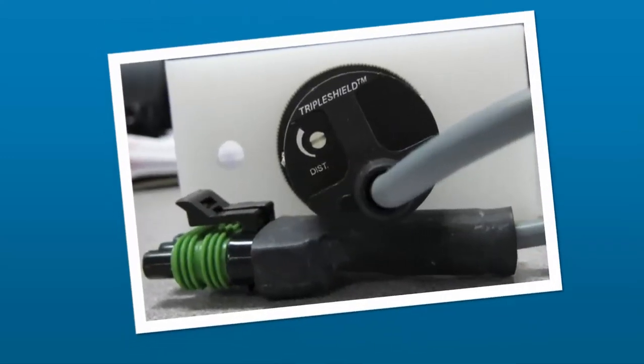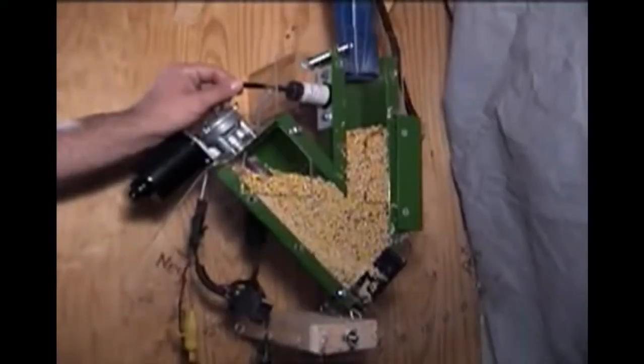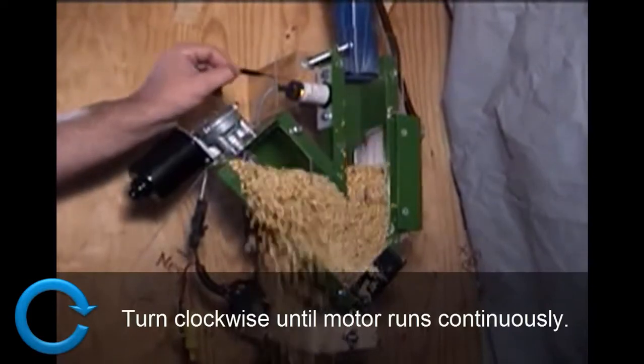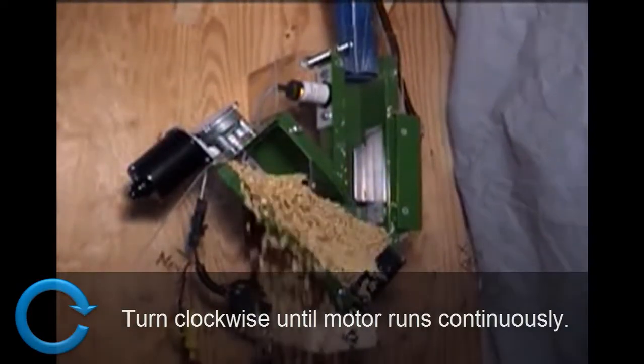The sensitivity of the proximity switch can be adjusted using a flathead screwdriver. First, turn the adjustment screw clockwise until the auger motor comes on with no grain in the elevator mount unit.